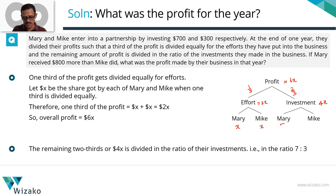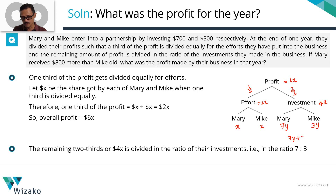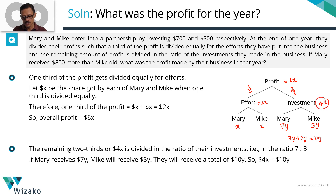So if Mary gets 7 parts, Mike will get 3 parts. Let's say 7 parts is 7y dollars, so Mike will get 3y dollars. Together for the investment component, that's 7y plus 3y. Mary plus Mike for investments take home 10y dollars, which equals this 4x dollars. So 4x equals 10y.